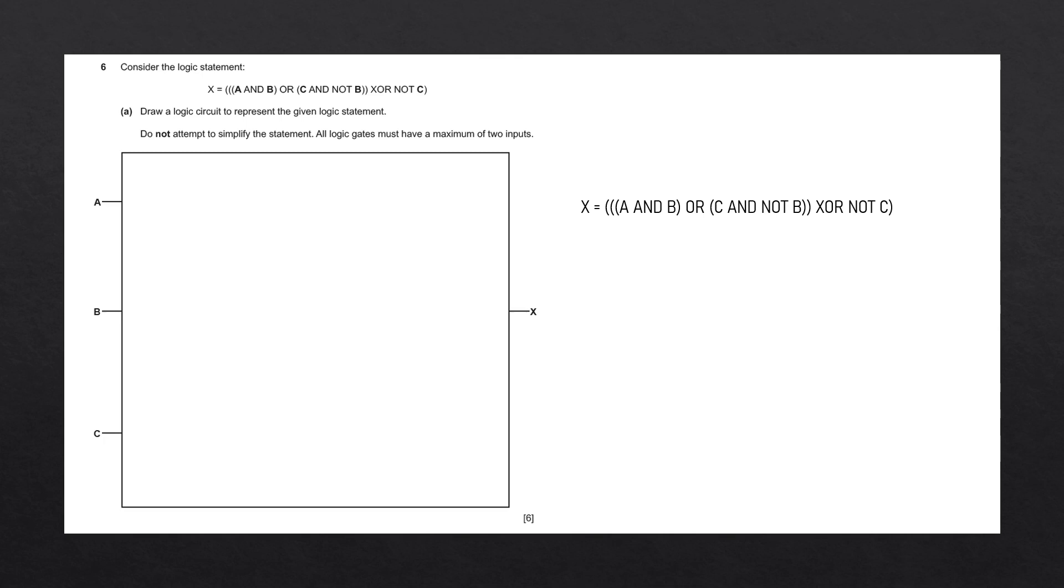I've rewritten the logic statement over here, and the reason we've done this is so that we can simplify the logic statement. The first step is to find the logic gate with the most brackets around it. Starting on the left-hand side, we're going to count the number of brackets around each logic gate and determine which one has the most brackets around it.